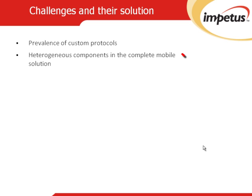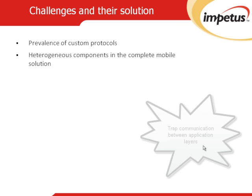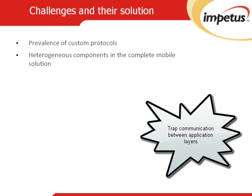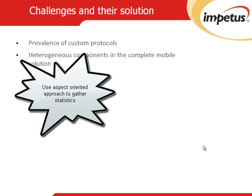The next challenge is heterogeneous components in the complete mobile solution. A mobile solution includes lots of components including the network carrier, ISPs, gateways, backend servers, and devices. The performance of a mobile application depends on all of these. Solution: we should break up the system communication to record events and gather test data. Trap the communication using tools between different layers of the mobile application. Using a spec-oriented approach, the code can be modified at runtime to gather statistics such as method invocations and timings based on user interactions.